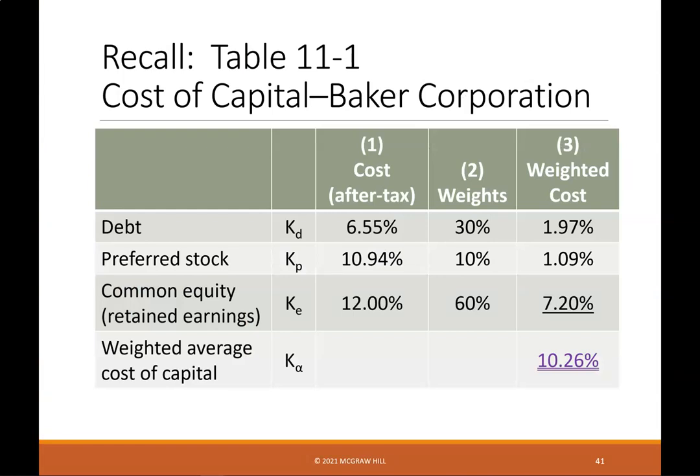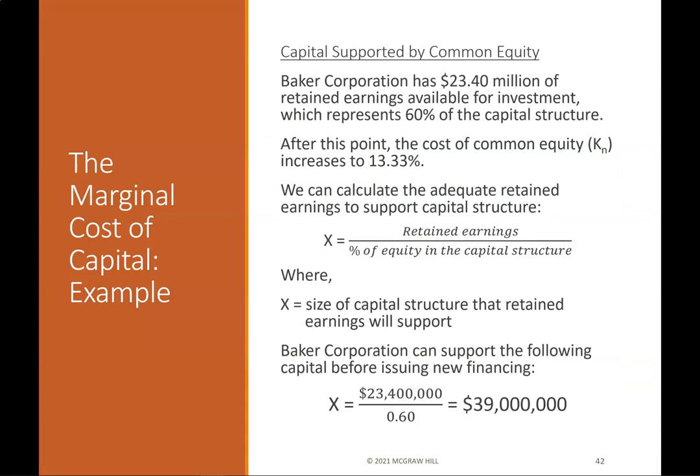Marginal cost of capital example: Baker Corporation's weighted average cost of capital is 10.26%. Baker Corporation has $23.4 million of retained earnings available for investment, which represents 60% of the capital structure. After this point, the cost of common equity KN increases to 13.33%. We calculate the capital supported: X = retained earnings / percentage of equity in the capital structure, where X is the size of the capital structure that retained earnings will support.